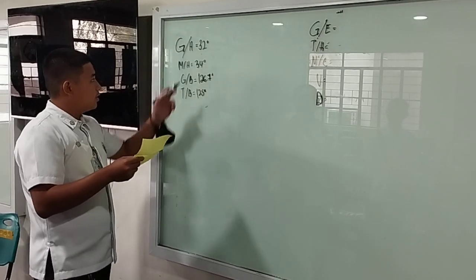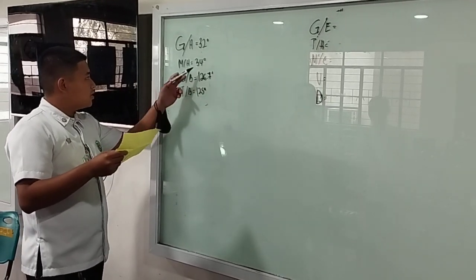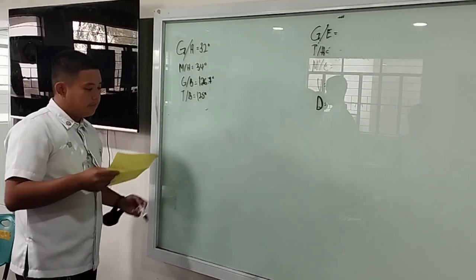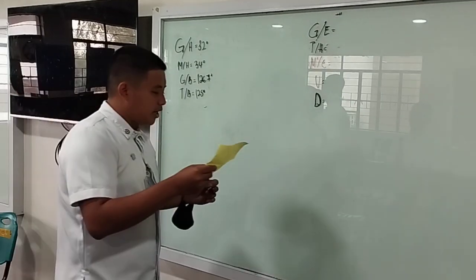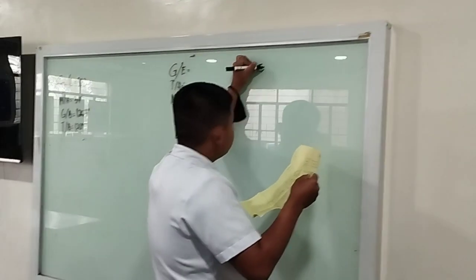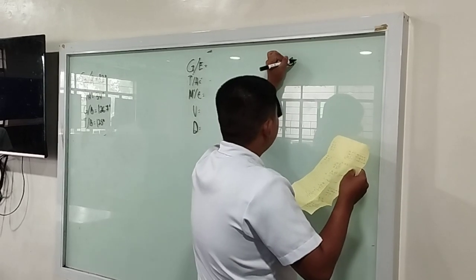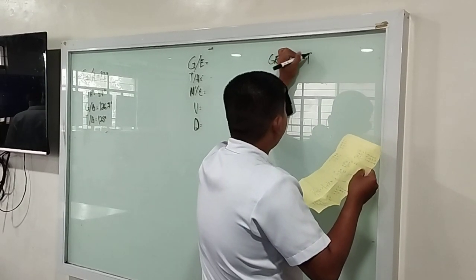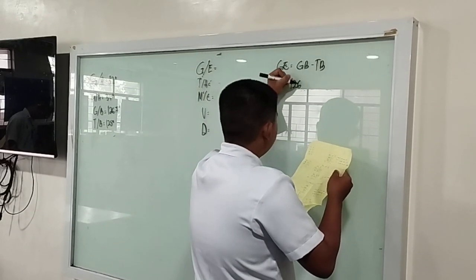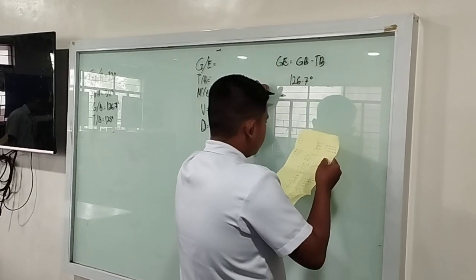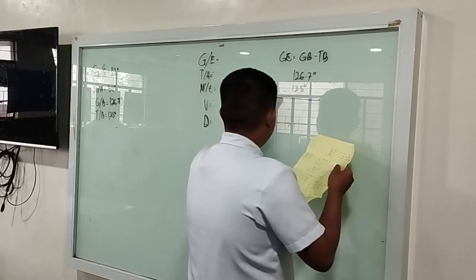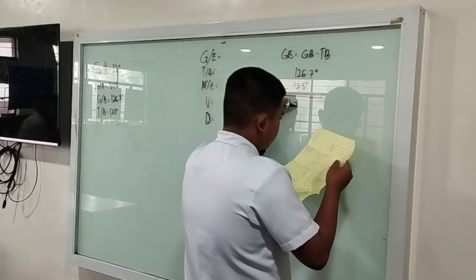Our gyro heading is 32 degrees and our magnetic heading is 34 degrees. Gyro bearing is 126.7 degrees and true bearing is 125 degrees. To get our gyro error, we need gyro bearing minus true bearing: 126.7 degrees minus 125 degrees equals 1.7 degrees.